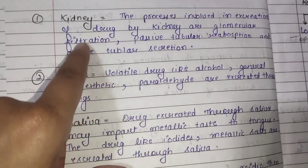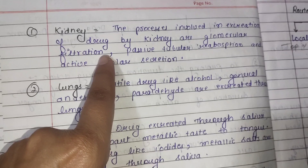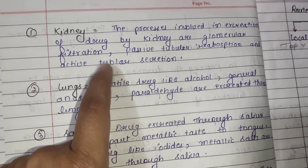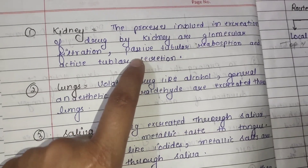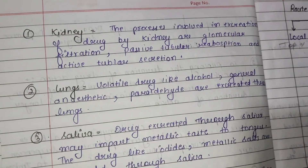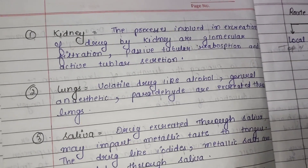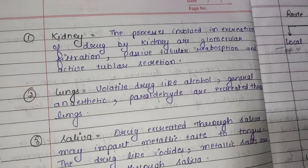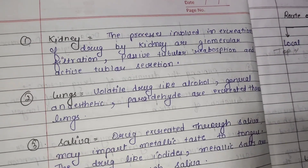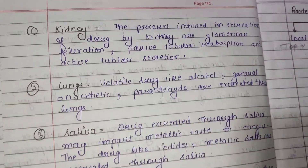First route is kidney. The processes involved in excretion of drug by kidney are: glomerular filtration, passive tubular reabsorption, and active tubular secretion.